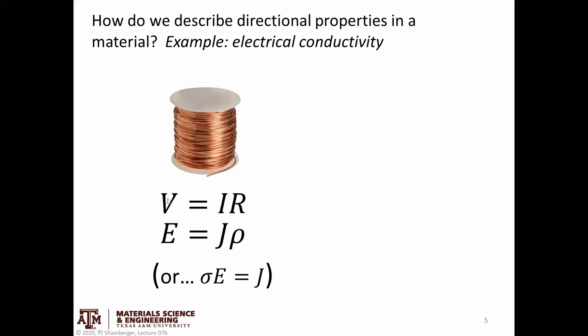Material scientists, we usually non-dimensionalize this. So we think about an electric field, a current density, and a resistivity. So rho is an intrinsic material property that relates a field to a current density.